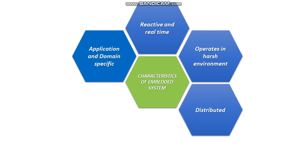The fourth characteristic is distributed. Certain embedded systems are part of a larger system and thus form components of a distributed system. These components are interdependent of each other but have to work together for the larger system to function properly.